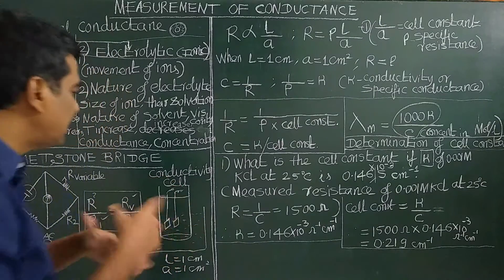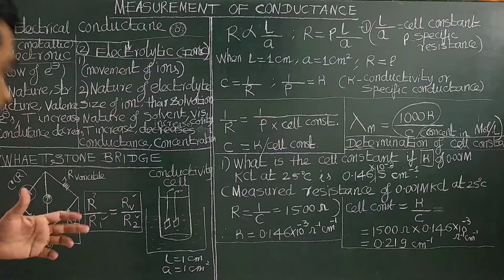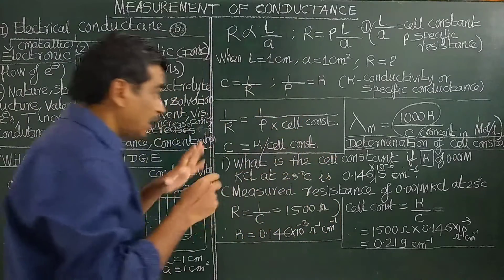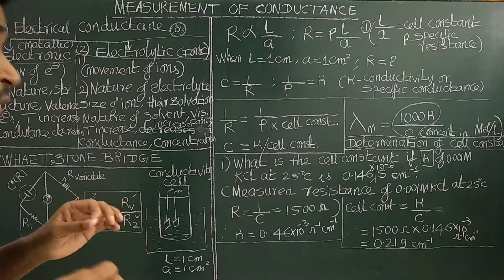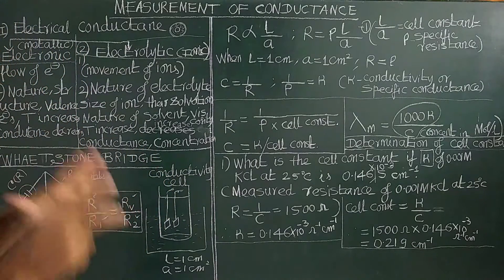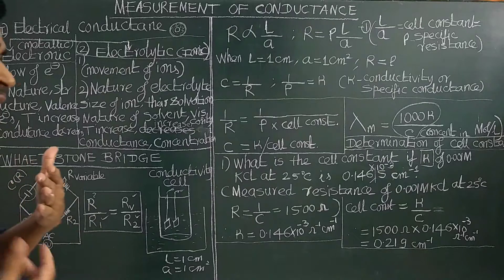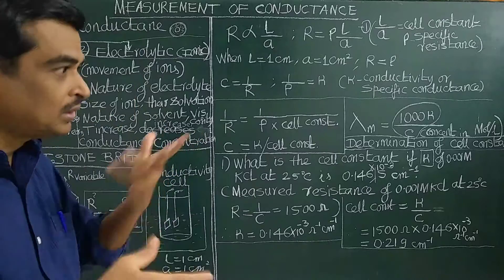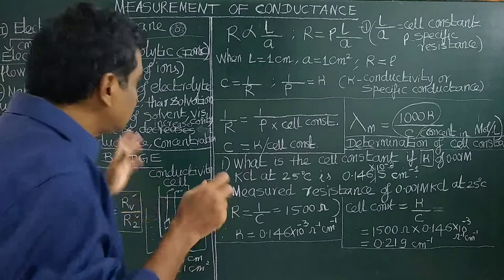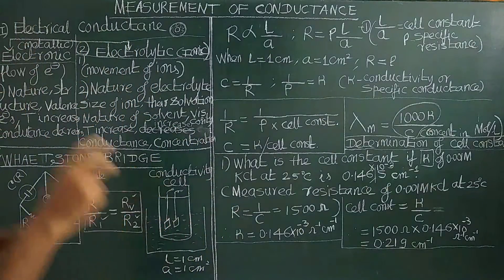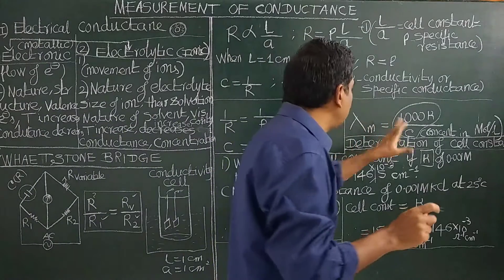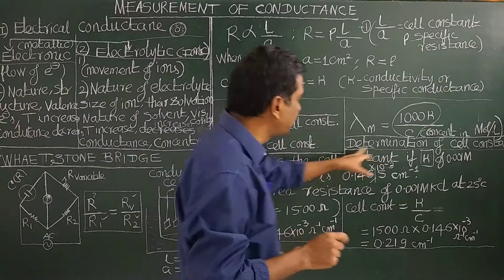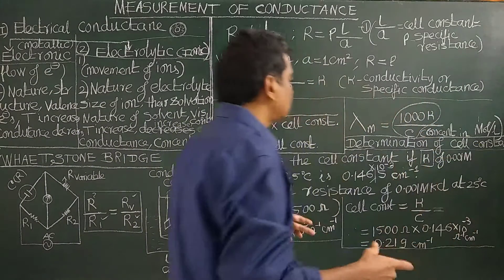The cell constant is determined experimentally. For qualitative or titrimetric calculations it is not required — we just measure relative conductance. But if you want to measure molar conductance quantitatively, you need to know the cell constant. So let us see how the cell constant is determined.